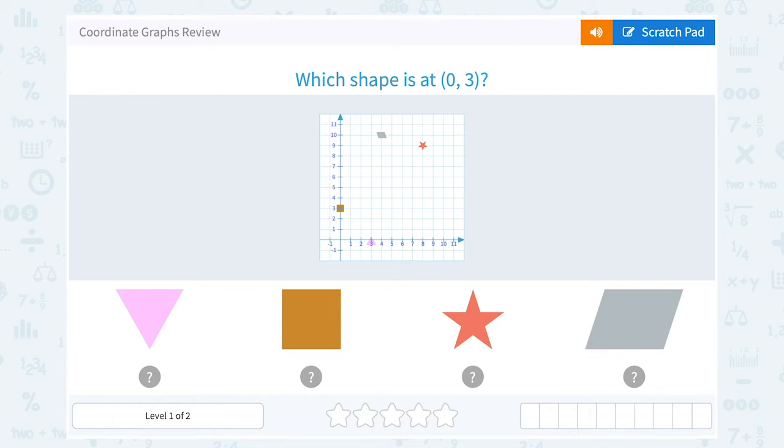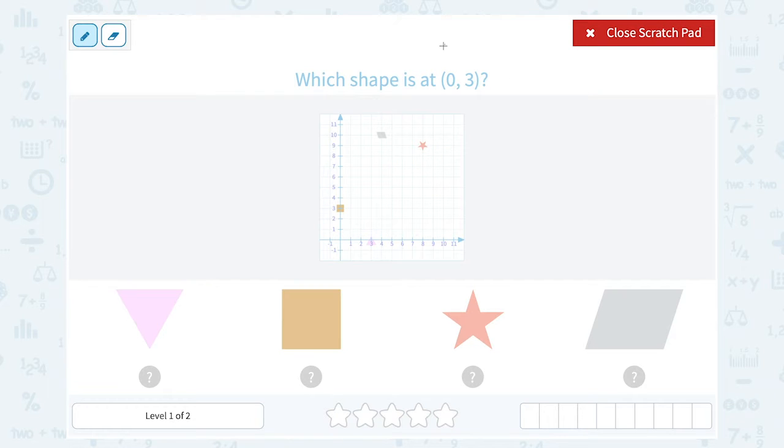Let's take a look at our coordinate graphs review. The first question asks which shape is at (0, 3). Okay, well keep in mind when you have that ordered pair, the first number, or our x coordinate,